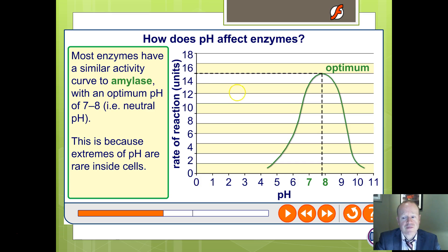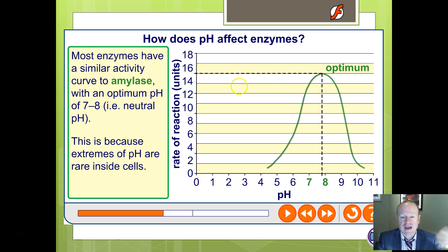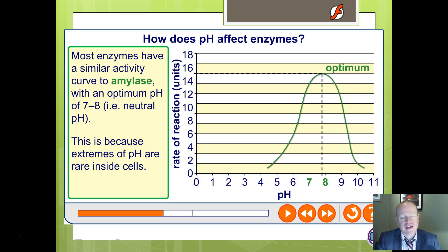Extremes of pH are pretty rare inside a cell. Intracellularly, the pH is controlled and is often around 7 — about neutral. You don't get high extremes inside the cell; it's only extracellularly where extremes can occur, or in artificial situations.